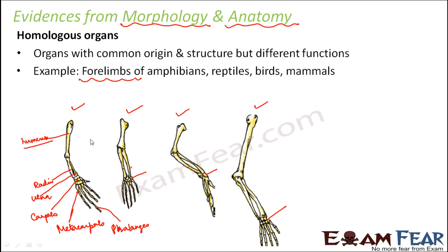But the purpose of the forelimb in each of these organisms is different — in some it helps in walking, in some flying, in some running, and in some swimming. So the function differs, but their structure and origin are the same. This shows that all these different classes of organisms might have come from a common ancestor, and this is how morphology and anatomy provide evidence that evolution existed.